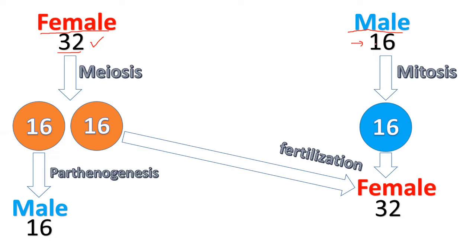Females will have 32 chromosomes — two sets — while males will have only 16 chromosomes. The first difference: females undergo meiosis, and when a cell having 32 chromosomes undergoes meiosis, it forms eggs or ova which have 16 chromosomes. So the egg formation contains 16 chromosomes.